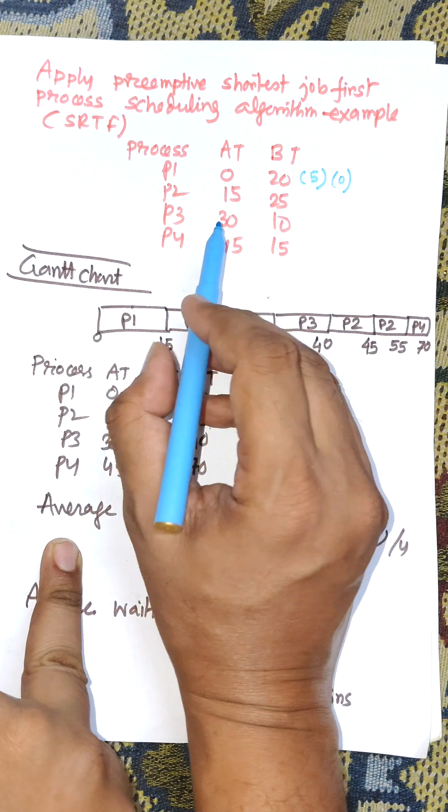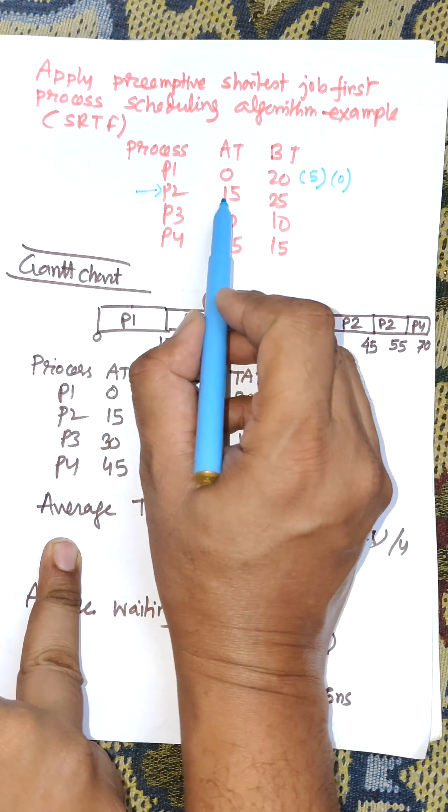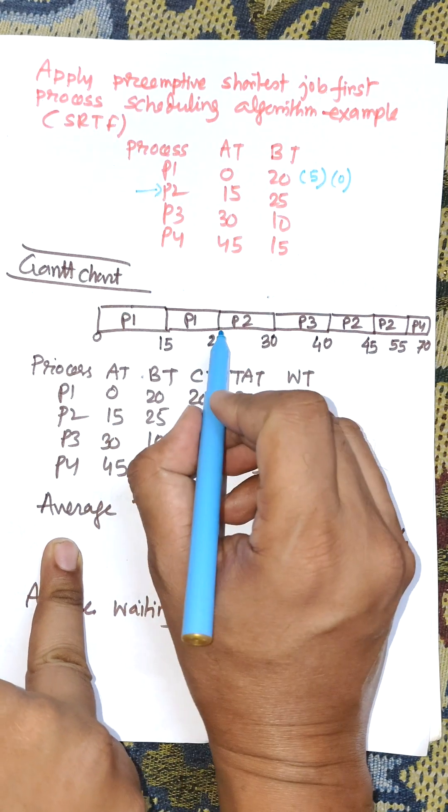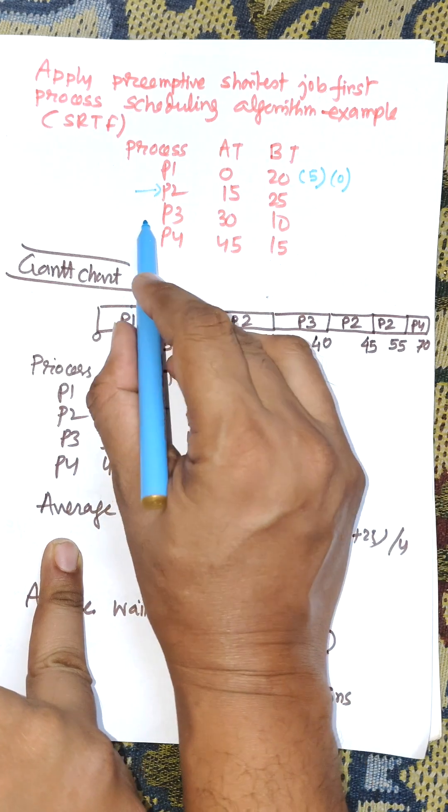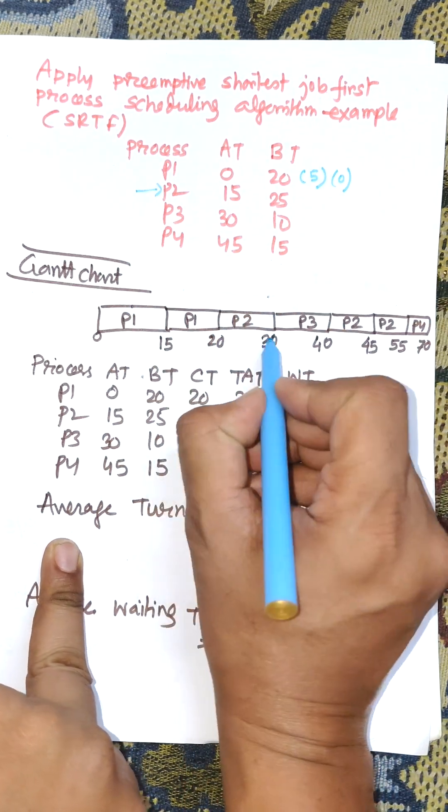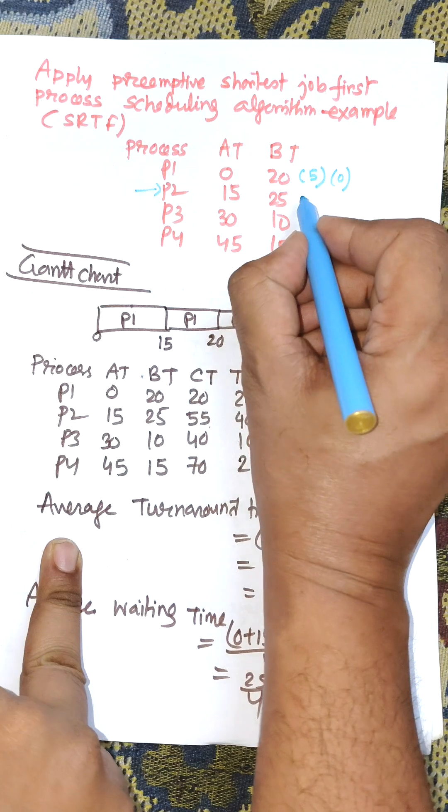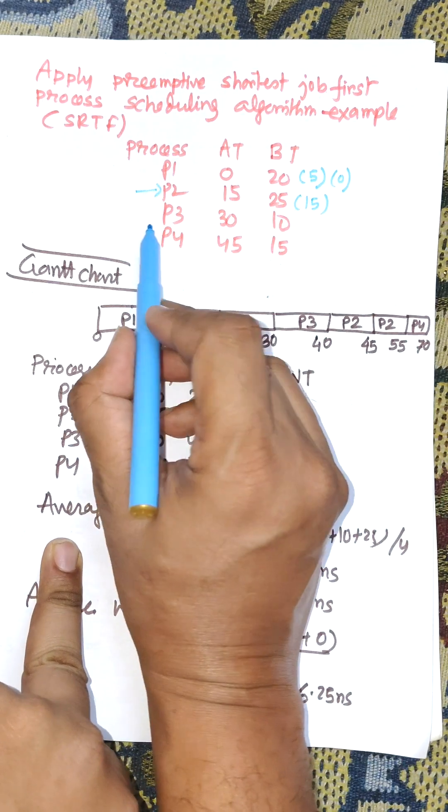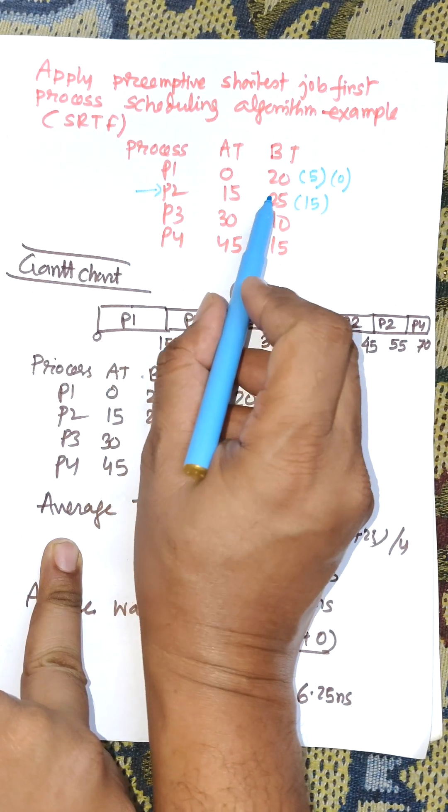Now the next process P2 arrived at arrival time 15. It will execute up to the next process, which is P3. During this, P2 completed 10 nanoseconds. The remaining time is 15. P3 arrived.